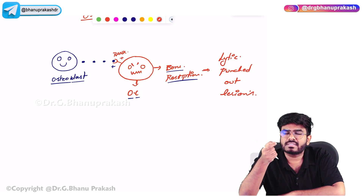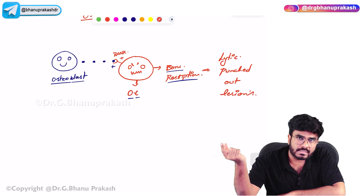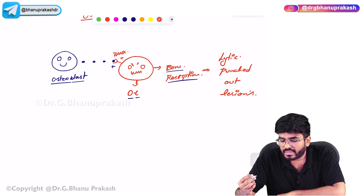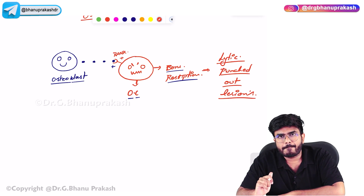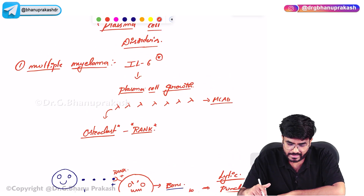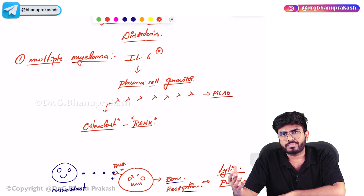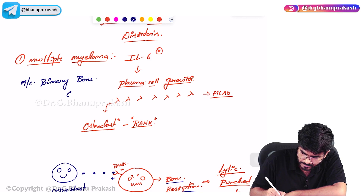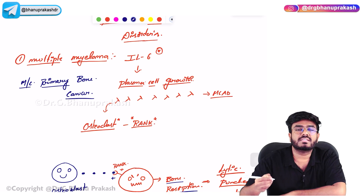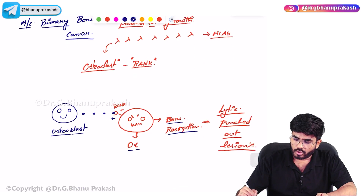There are some other cancers where punched-out lesions can be seen, such as T-cell chronic leukemias, but classically, lytic punched-out bone lesions are talking about multiple myeloma. Multiple myeloma is a cancer of plasma cells — too many plasma cells crowding out the bone marrow. It is the most common primary bone cancer. Of course, metastasis is the overall most common, but the most common primary bone cancer is multiple myeloma.